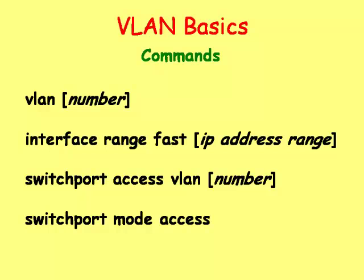The VLAN command creates the VLAN for the switch. The Interface Range Fast Ethernet command is not an actual VLAN command but is useful for configuring a large range of interfaces at one time. The switchport access VLAN command assigns a specific VLAN number to be used by the interface but does not actually put the interface in VLAN configuration mode. The switchport mode access command does actually put the switch interface into the VLAN access mode.